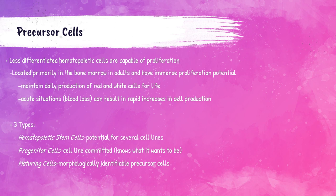Precursor cells are less-differentiated hematopoietic stem cells that are capable of proliferation, located primarily in the bone marrow in adult patients. They are responsible for the daily production of erythrocytes (red blood cells) and leukocytes (white blood cells). There are three types: hematopoietic stem cells, which have the potential to become several cell lines; progenitor cells, where the cell line is committed and knows what it's going to be; and maturing cells, which are morphologically identifiable precursor cells that you can look at and know what they will become.